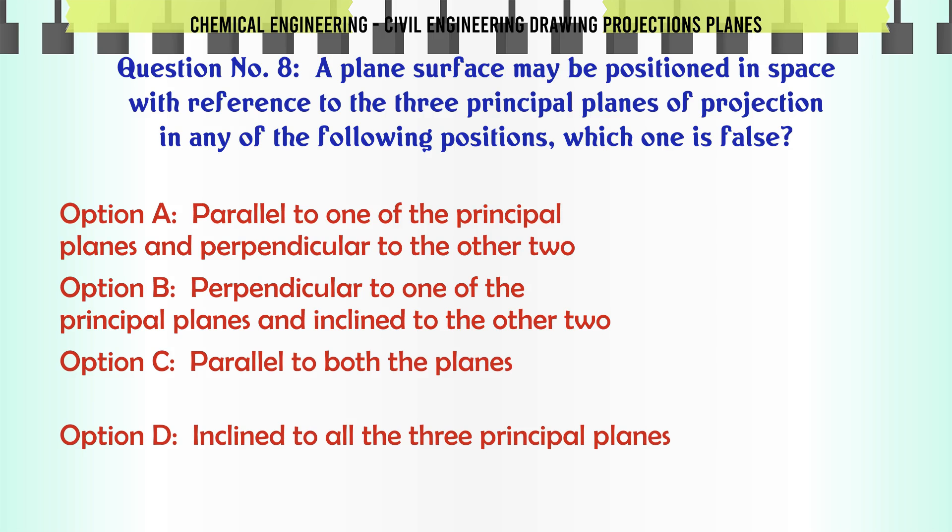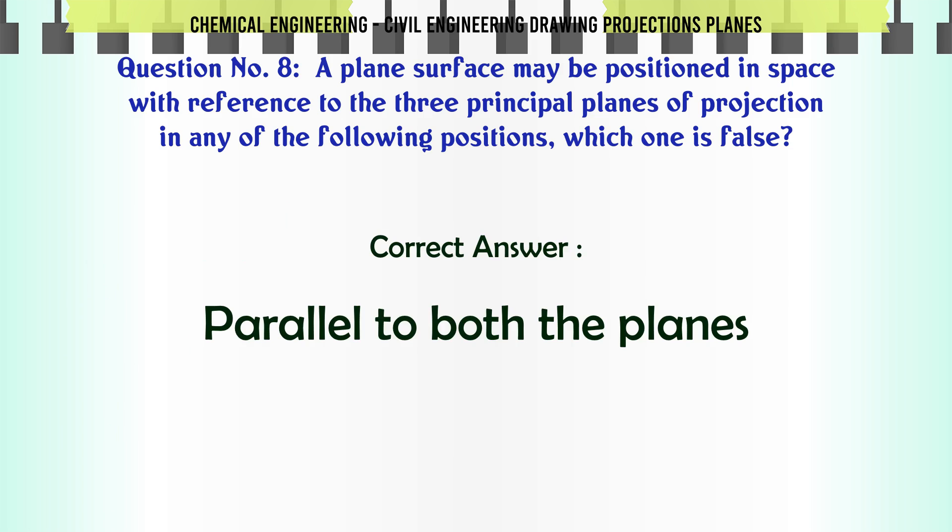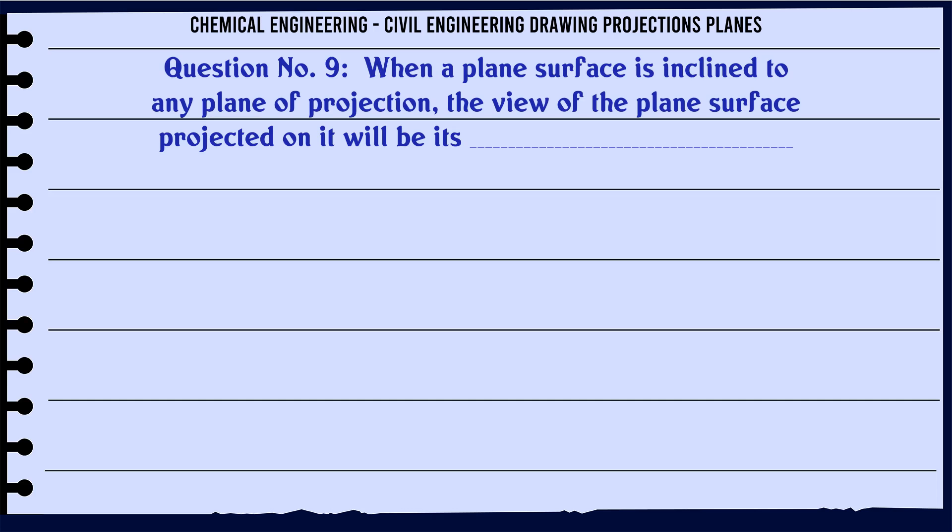A plane's surface may be positioned in space with reference to the three principal planes of projection in any of the following positions, which one is false? A. Parallel to one of the principal planes and perpendicular to the other two. B. Perpendicular to one of the principal planes and inclined to the other two. C. Parallel to both the planes. D. Inclined to all the three principal planes. The correct answer is Parallel to both the planes.